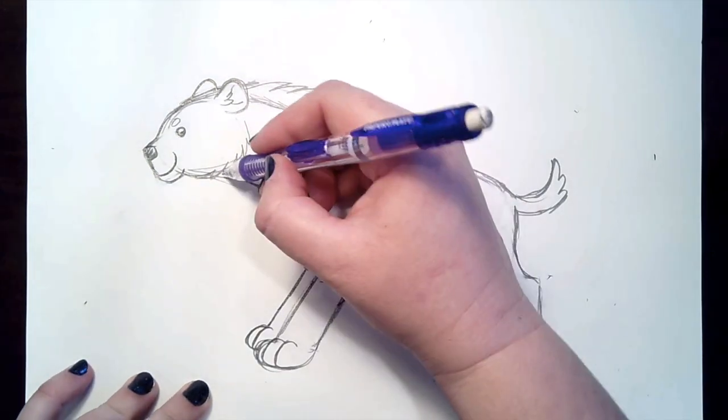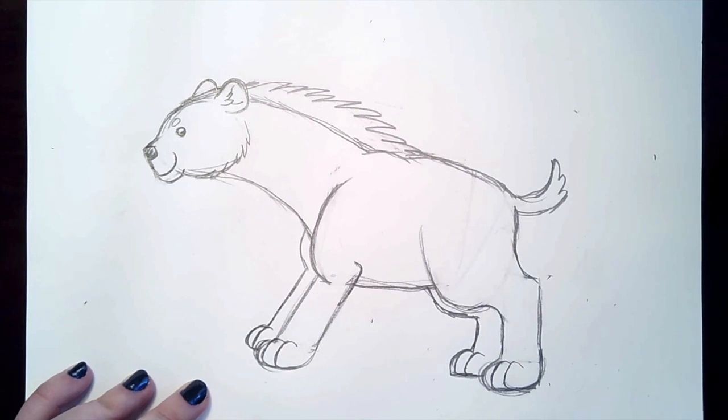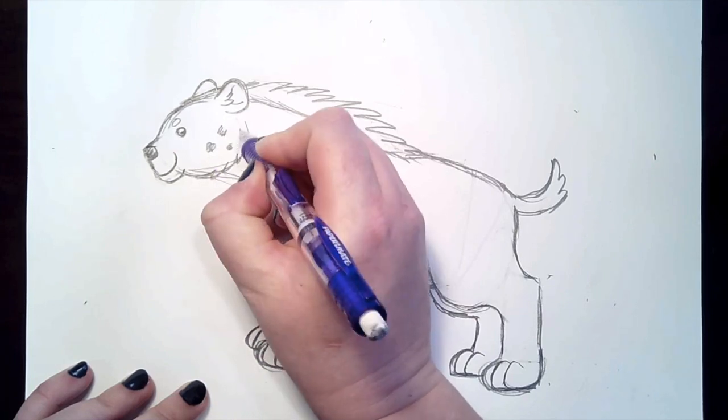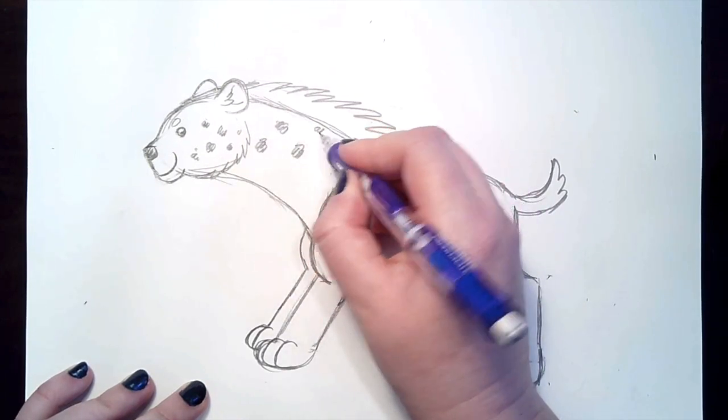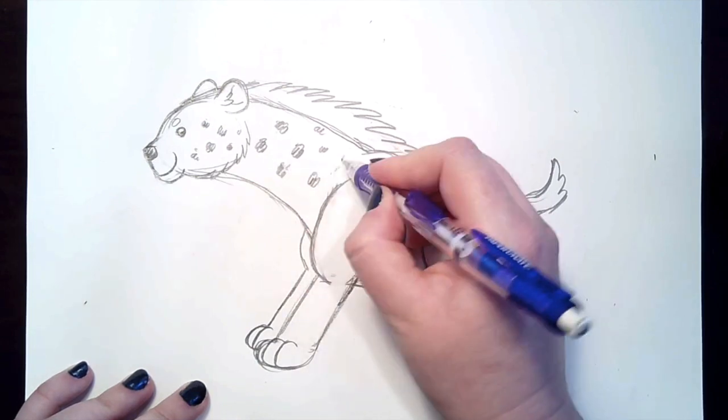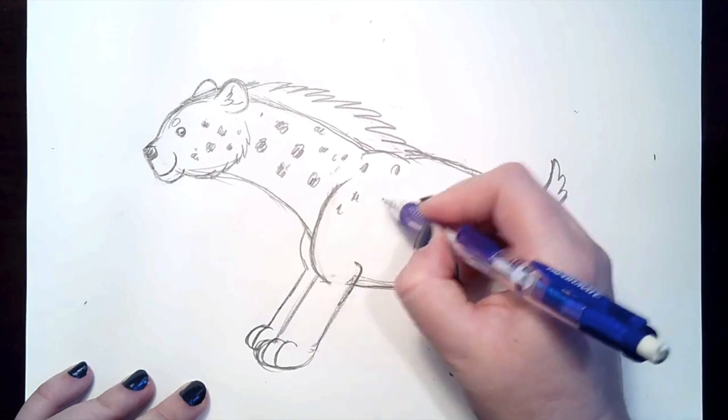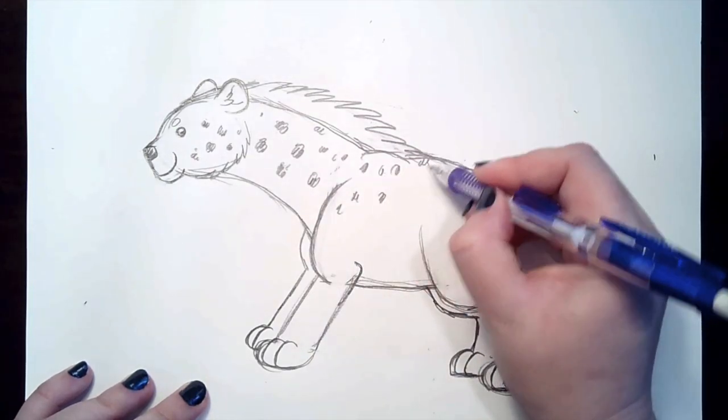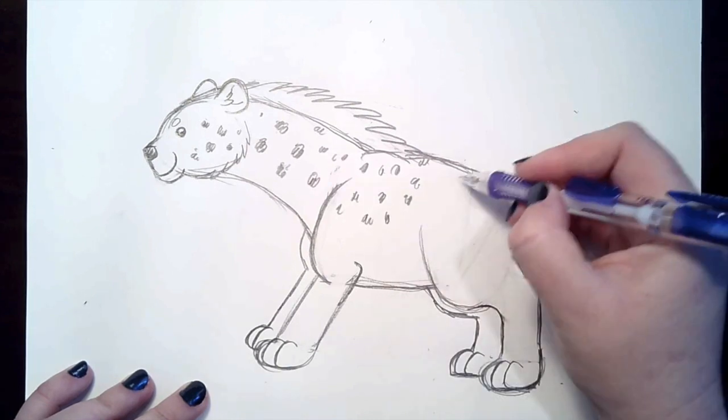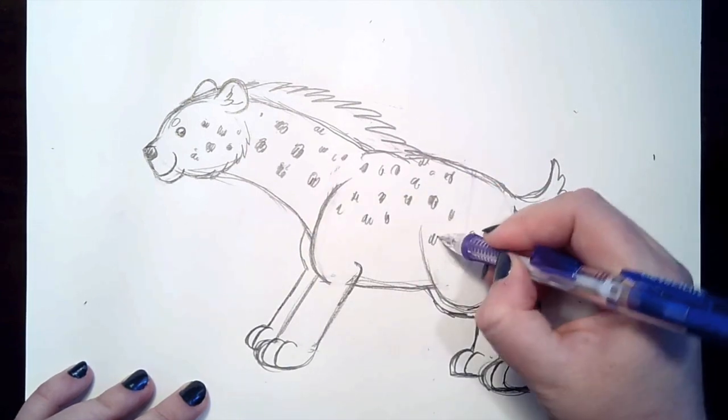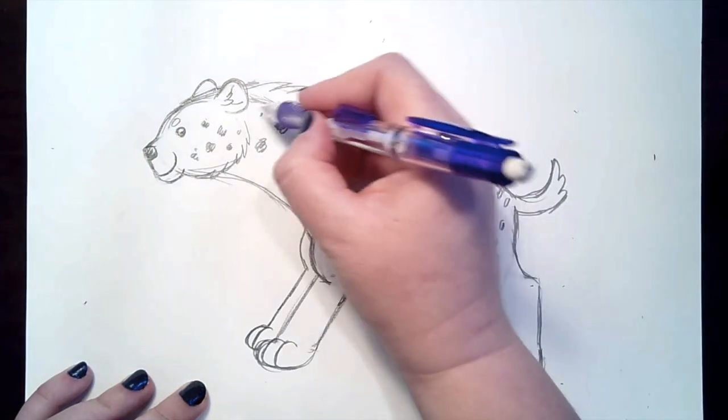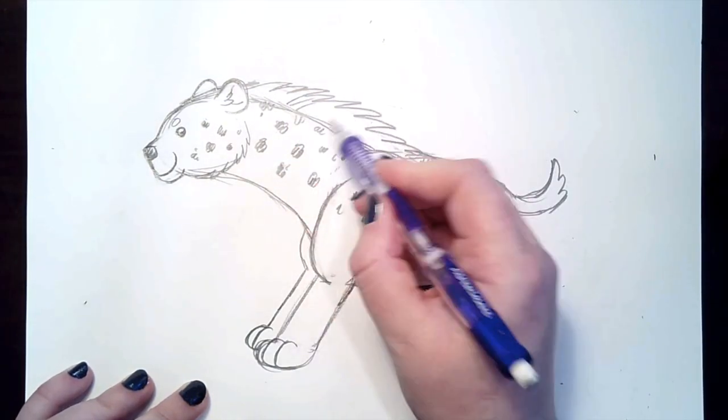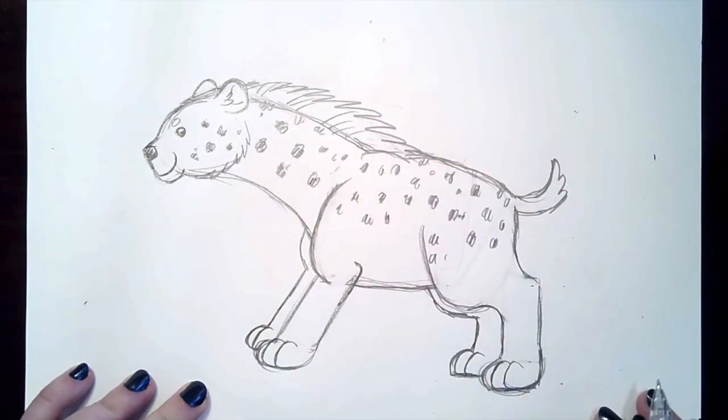Our hyena is looking pretty good. Let's go ahead and add in some of his markings. So hyenas are all going to be different, they're all very unique, but they mostly just have spots. And so I'm just going to make a bunch of spots that are kind of different shapes. You can make them almost like scribbled spots so that they look furry. And I'm mostly just going to make them on the top of his back. You can add in a few more lines on his mane to show that fur texture.